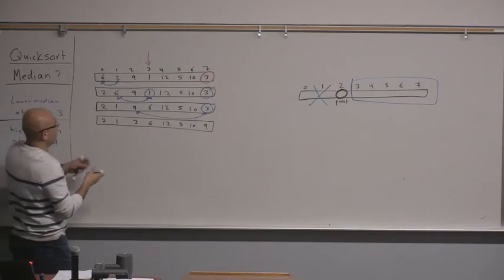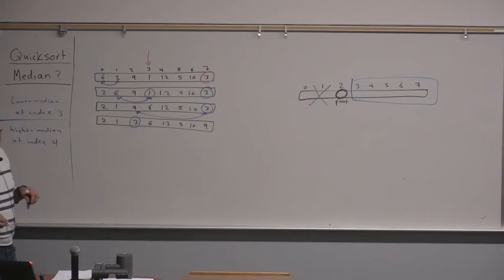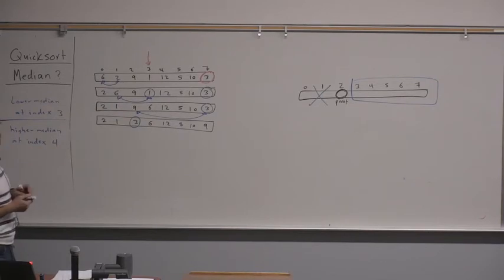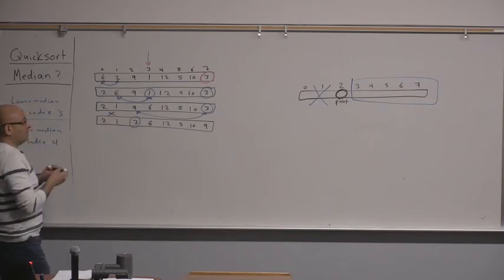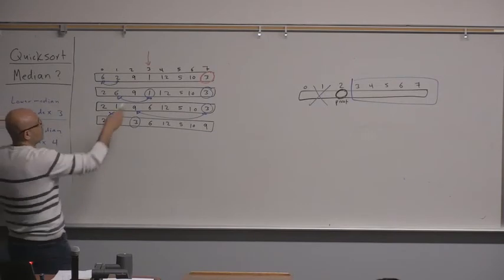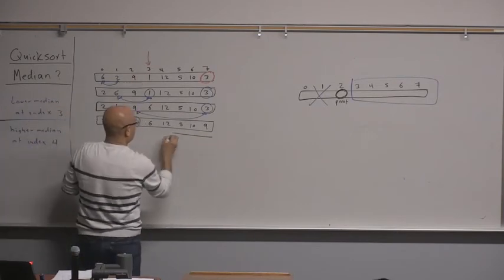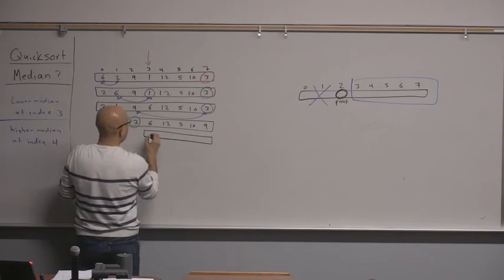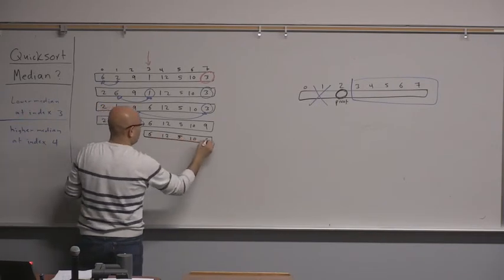Now the pivot is at index 2 and we're looking for order 3, so we eliminate the left subarray and keep the right: 6, 12, 5, 10, and 9.